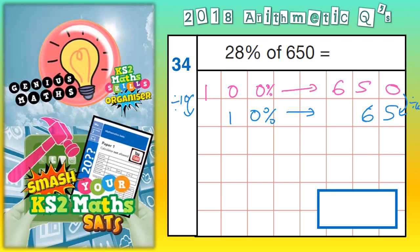Now, we know that 10% is worth 65, we can build this back up to 20% by doubling it. So, if you double 10%, you get 20%.